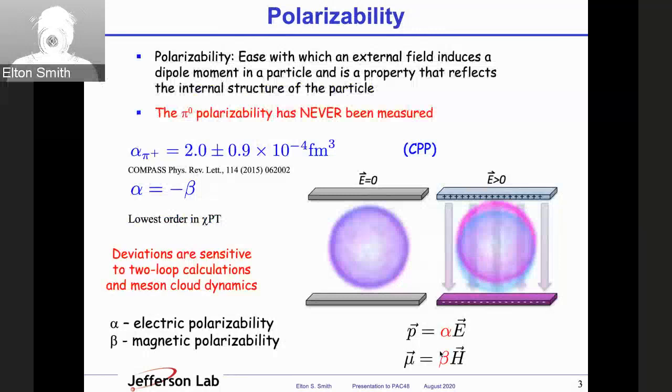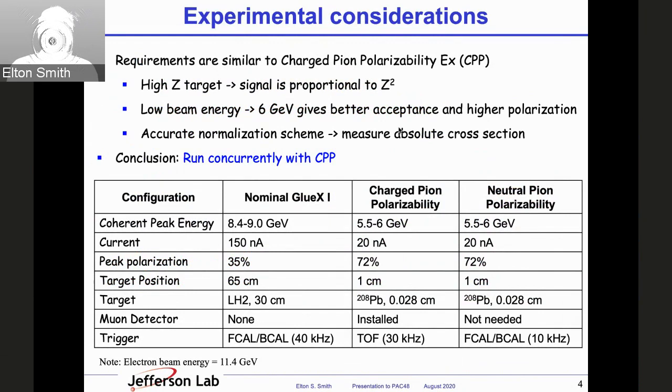The polarizability is the ease with which an external field induces a dipole moment in a particle and is a property that reflects the internal structure of the particle. Up to now, the pi zero polarizability has never been measured, but we can glean the magnitude of the polarizability from measurements of the charge pion. Here I show the measurement from COMPASS, which is 2 plus or minus 0.9 in units of 10 to the minus 4 femtometer cubed. The charge pion polarizability is the target of the CPP experiment, which is already approved. To lowest order in perturbation theory, the pion polarizability is completely determined. The electric polarizability is equal in magnitude to the magnetic polarizability, but they're of opposite sign.